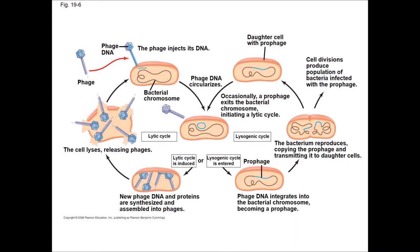This diagram compares the lytic cycle — which includes rapid replication of viral particles inside the cell followed by cell lysis — to the lysogenic cycle, where the viral genome is incorporated into the bacterial genome to form a prophage. As the cell replicates its DNA and divides, it also replicates the phage DNA and passes it to daughter cells. Passing down a gene through cell division is called vertical transmission. Transmitting a gene to another organism through infection, conjugation, or transformation is horizontal transmission.